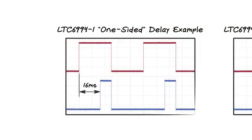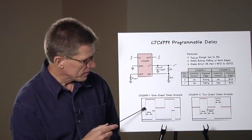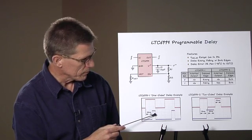The first photo shows the LTC6994-1 set up to produce a 16 millisecond delay, being excited by two pulses. You can clearly see that only the first edge is delayed, and that the second edge is coincident with the input signal.